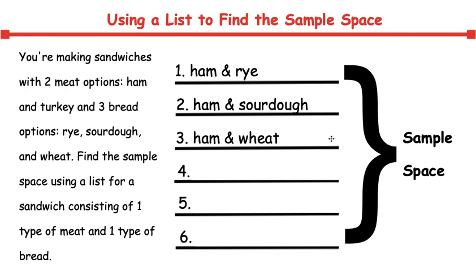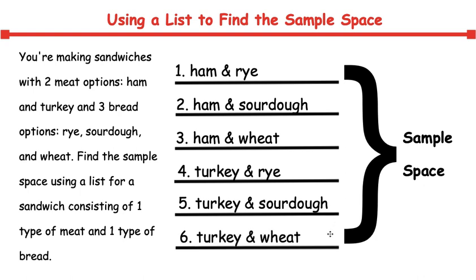Let's use our other protein which is turkey. With turkey I can use rye bread. I can also use it with sourdough bread. And also I can use turkey with wheat bread. So here we have six different sandwiches and all of these options represent the sample space.